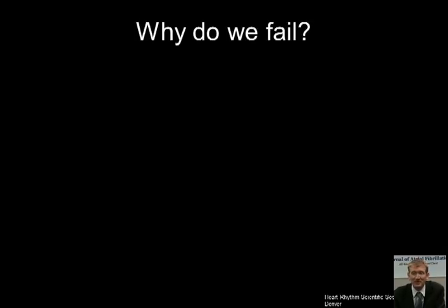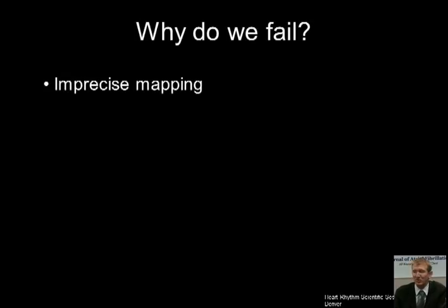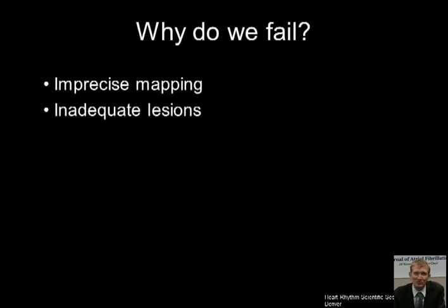Is it due to imprecise mapping? In terms of atrial fibrillation, we do know where we are meant to ablate. So mapping in terms of patients with paroxysmal atrial fibrillation is not a problem. However, what is a problem is inadequate lesion formation. There is a multitude of data which shows that when people return with AF following a paroxysmal AF ablation, there is recurrence of conduction across the pulmonary vein-left atrial border.